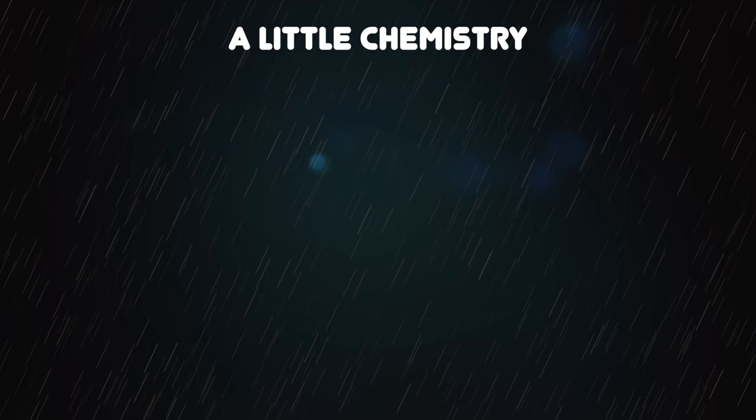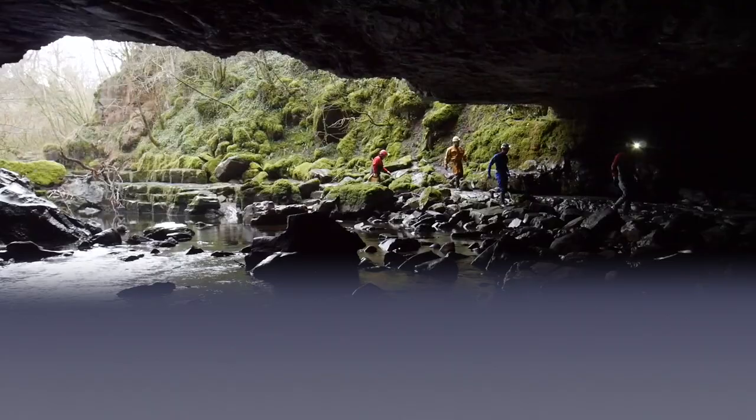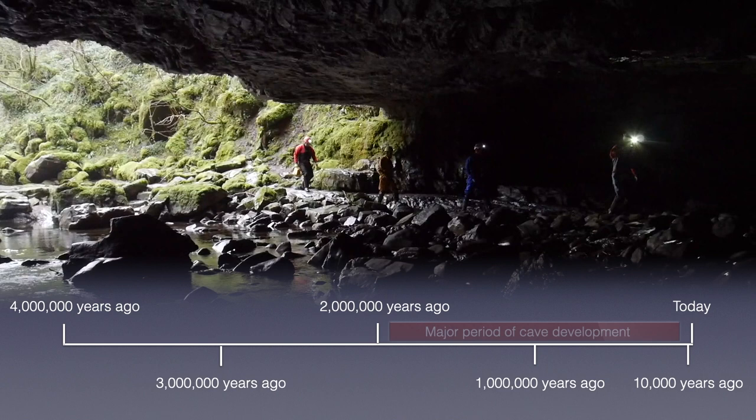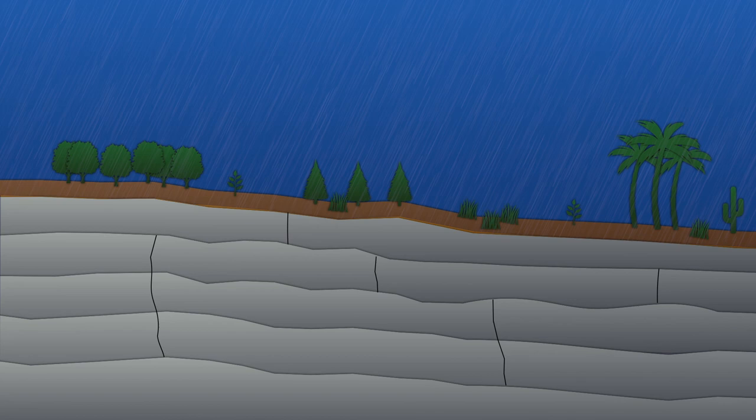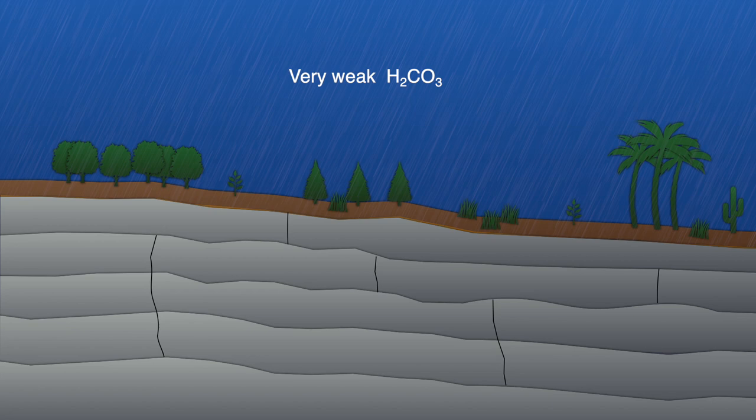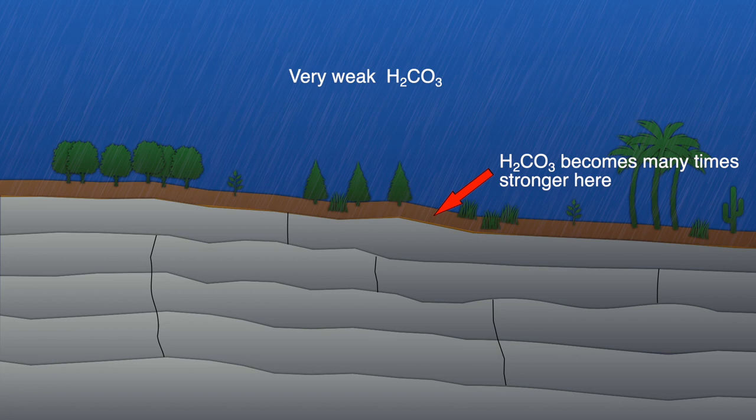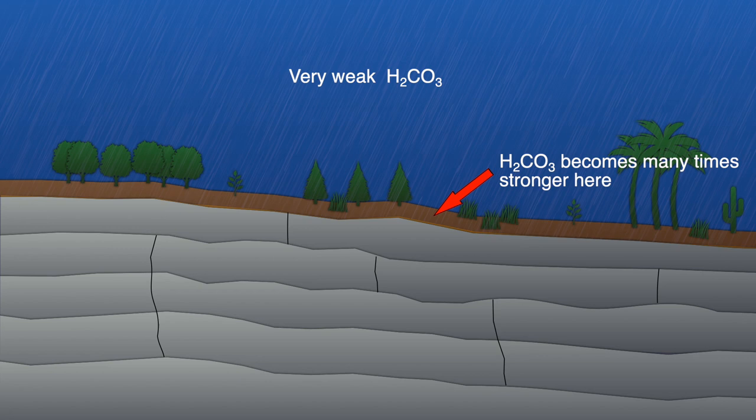The major period of cave development was from about 2 million years ago to around 10,000 years ago. The carbonic acid derived from falling rain through the atmosphere is extremely weak, and most of the acidity is added in the soil and the peat layers covering the limestone, by the decomposition of organic matter and microbial respiration releasing CO2. This diagram shows water making its way underground, dissolving the limestone rock on its journey.